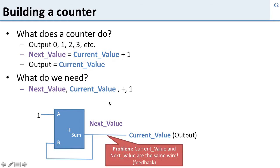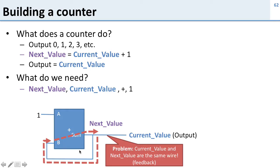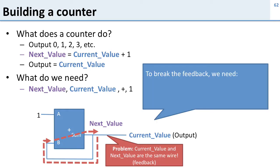The problem here is feedback. This adder is going to take its input, add 1, and send that output directly back into the input — it just goes around and around. This is not a counter that will count nicely 0, 1, 2, 3. It's going to give random garbage because the feedback loop runs so quickly. So this feedback is not a good idea and it's not going to work.